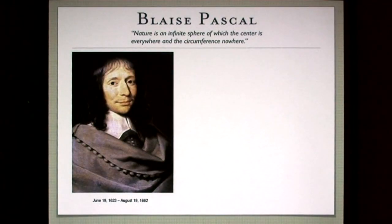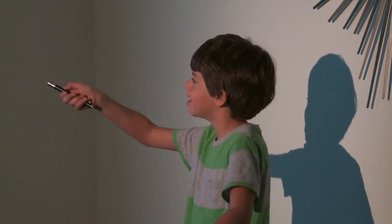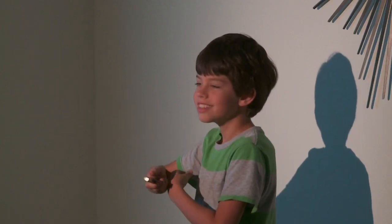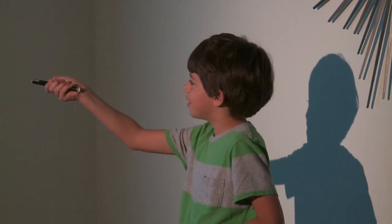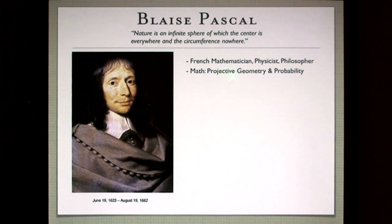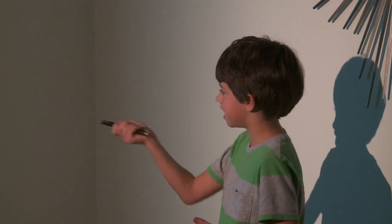The next very important person I'm going to talk about is Blaise Pascal. I'm going to read a quick quote from him, which I don't quite understand: 'Nature is an infinite sphere of which the center is everywhere and the circumference is nowhere.' He was a French mathematician, physicist, and philosopher. He formalized projective geometry and helped develop probability. He also built one of the first adding machines at age 18.